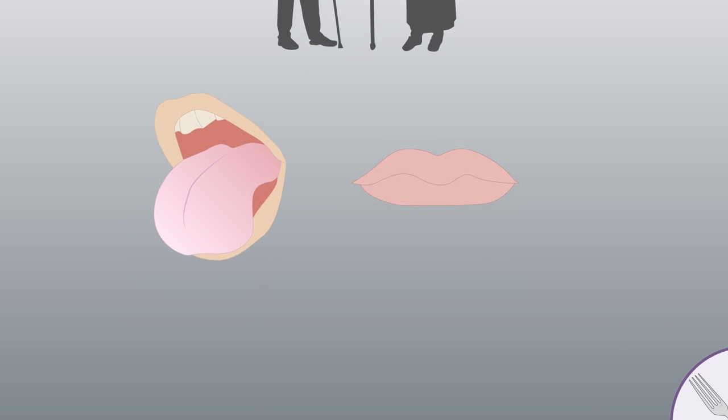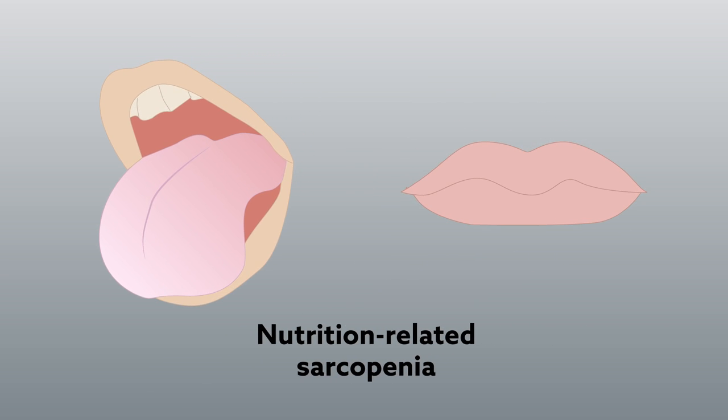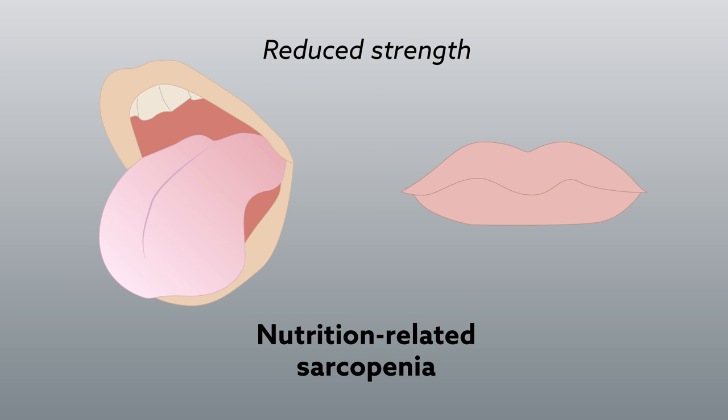The researchers found that regardless of food intake level, tongue and lip strength were negatively associated with a presence of nutrition-related sarcopenia. That is, patients with this condition showed significantly reduced strength of both muscle groups.